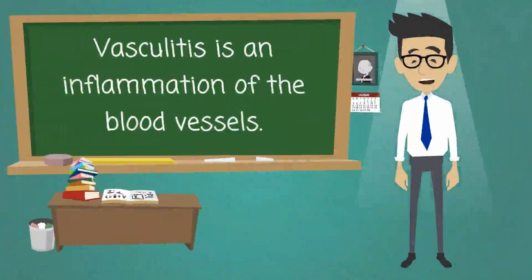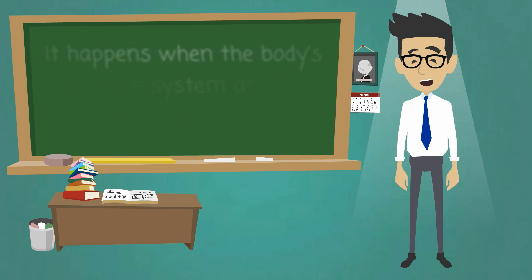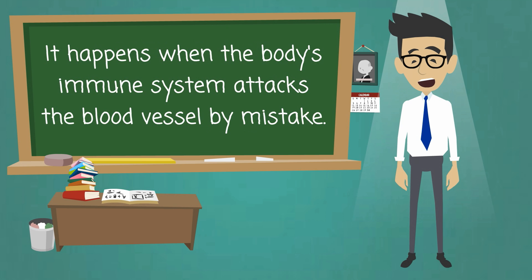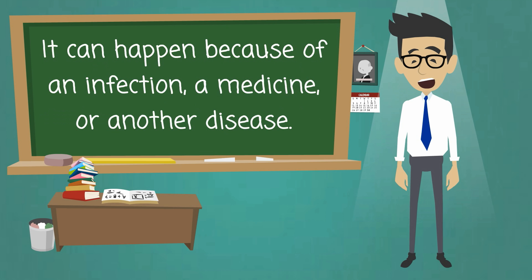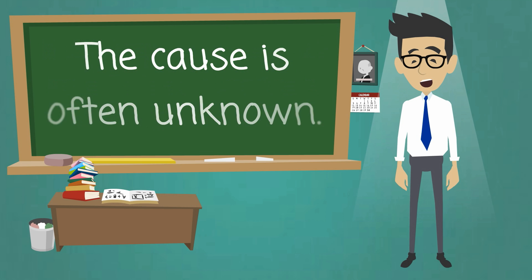Vasculitis is an inflammation of the blood vessels. It happens when the body's immune system attacks the blood vessel by mistake. It can happen because of an infection, a medicine, or another disease. The cause is often unknown.